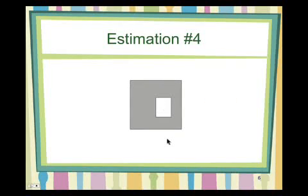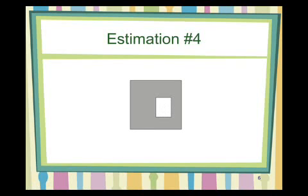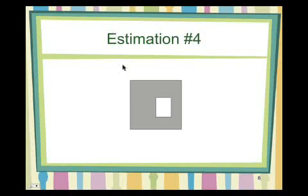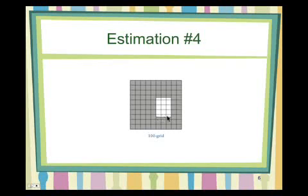And the last one. I'll probably use subtraction because I know the whole thing is 100%. Instead of trying to count all the shaded stuff, maybe what I'll do is estimate the white unshaded part and then subtract it from 100. Looking at this, maybe it's four high and three across — so I'm going to estimate that's 12. And so 100 minus 12 is 88. It's definitely three across, and it looks like it's four high because there's a little half at the top and half at the bottom. So I'm going to guess I'm right.